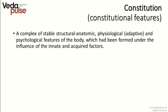Each time we start with basic notions for those who have just joined us. A constitution is a complex of stable structural, anatomic, physiological and psychological features of the person, which had been formed under the influence of innate or acquired factors. It is important to know the constitution type of the patient because peculiarities of the constitution type form a tendency to certain pathogenic processes and diseases. Correction of the constitution features allows to prevent development of the disease. Knowing predispositions to diseases, the specialist can perform a preventive treatment, which is the highest level of the art of healing.